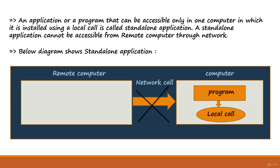Whatever you are seeing in the diagram on the screen, a remote computer is calling a program which is in the local computer through a network. But it is not accessible — that's why I have marked it as wrong for the network call.